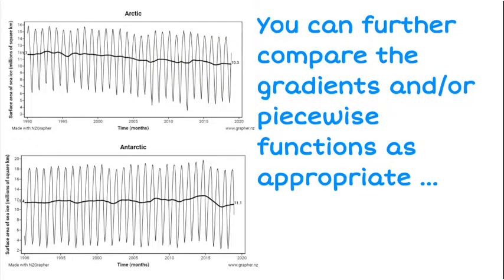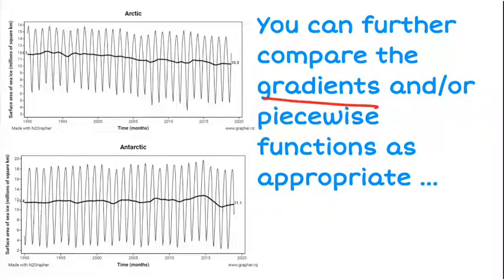I would also go further, calculate the gradients of both, and talk about how one has a much bigger or smaller gradient. And if the data was appropriate I would do a piecewise function — in this case I wouldn't — I would simply look at calculating the gradients and making a more specific comparison.